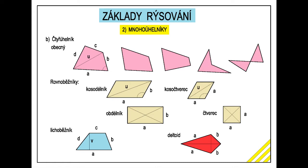Je nutné určit další parametr, úhel nebo úhlopříčku. V lichoběžníku lze pro jednoznačné určení použít výšku. Obdelník a čtverec jsou určeny stranou.